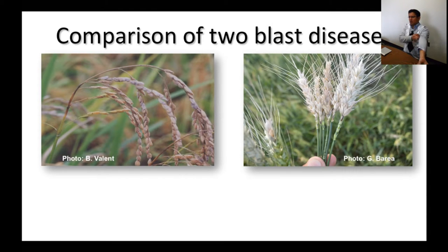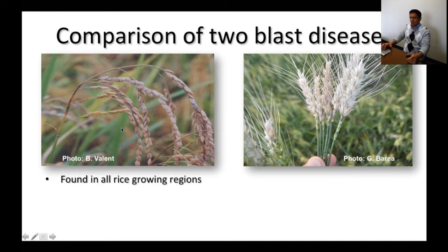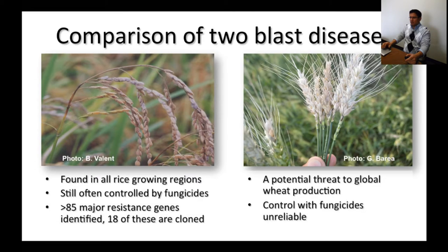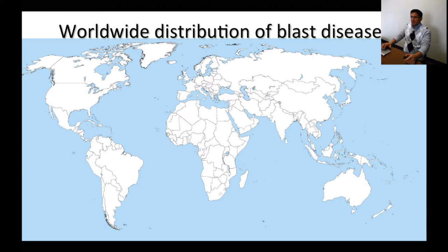Let's get started with a quick comparison of two blast diseases. On the left we have the rice blast disease — an ancient disease found in all rice-growing regions, still often controlled by fungicides, with more than 85 major resistant genes identified and 18 already cloned. On the other side we have the wheat blast disease, an emerging disease considered a potential threat to global wheat production. Control with fungicides is still considered unreliable under highly conducive conditions, and unfortunately there are few resistant genes identified.